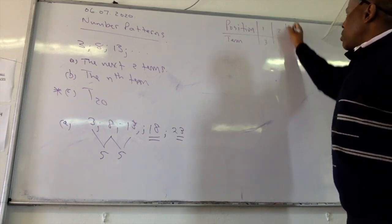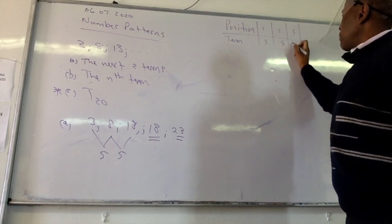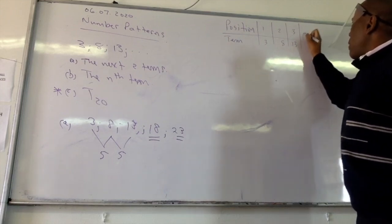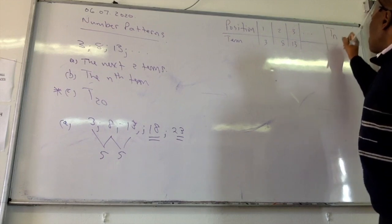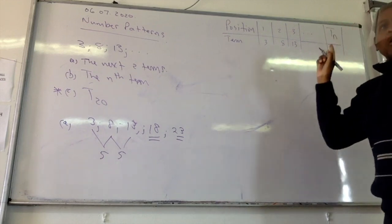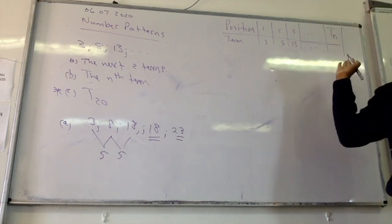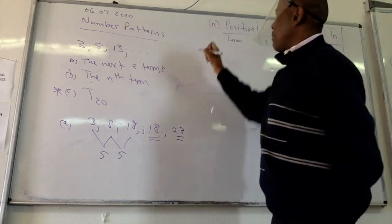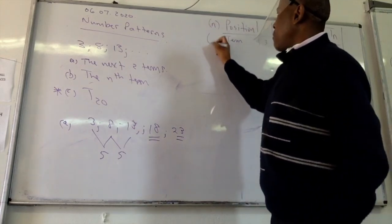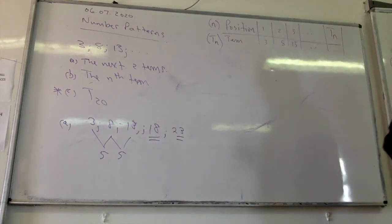And what is in position two? Eight. And what term is in position three? 13. And now we are trying to find what could be in position n. So I'm putting these dots because this thing continues forever. So the position is represented by n, and the term itself is represented by Tn. So remember that, okay?